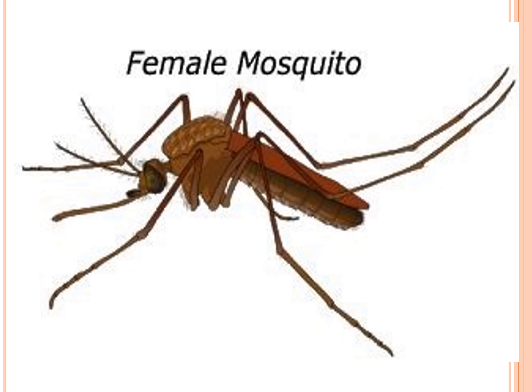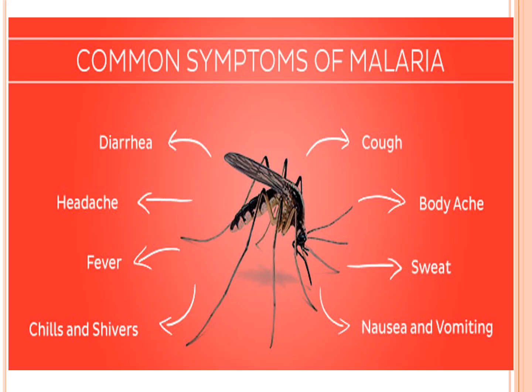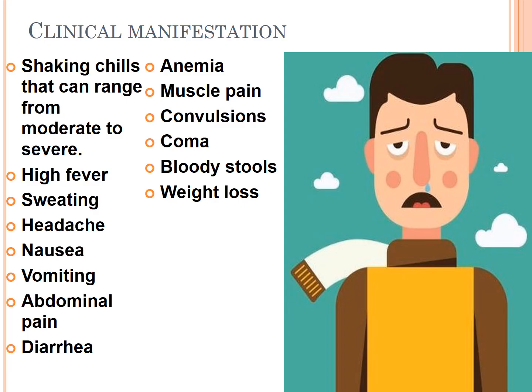Symptoms include fever, chills, diarrhea, cough, body aches, sweating, and nausea. Manifestations include shaking chills ranging from moderate to severe, high fever, sweating, headache, nausea, vomiting, abdominal pain, diarrhea, anemia, muscle pain, and convulsions. Severe symptoms include coma and blood disorders, which can be fatal if the patient does not receive treatment.